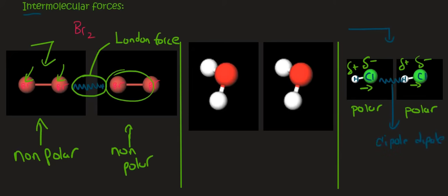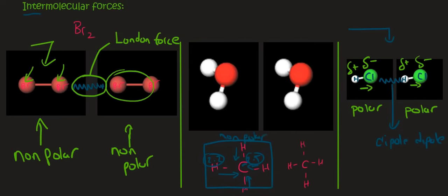Of course you can have molecules like methane. Carbon has an electronegativity of about 2.5, whereas hydrogen is about 2.1 or 2.2. So there is a difference, and the electrons would be more attracted to the carbon. But that happens on every side, and so all of those arrows cancel each other out, meaning the entire molecule is still called non-polar. Even though the individual bonds are polar, the entire molecule as a whole, due to symmetry, is non-polar.